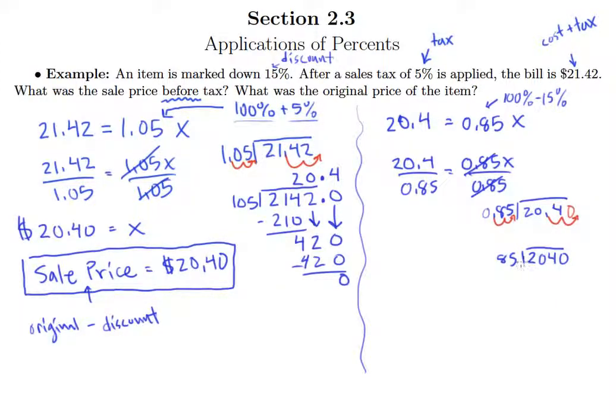85 does not go into 2. It does not go into 20. 85 goes into 204 just twice. So we have a remainder of 34. Drop down the 0.